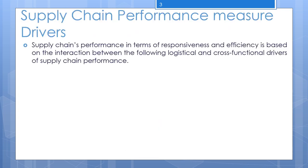Supply chain performance in terms of responsiveness and efficiency is based on interaction between logistical and cross-functional drivers. There are several performance measure drivers, of which the facility is one important driver. Let us discuss the role that facilities play in the supply chain, as well as critical facility-related decisions that supply chain managers need to make.